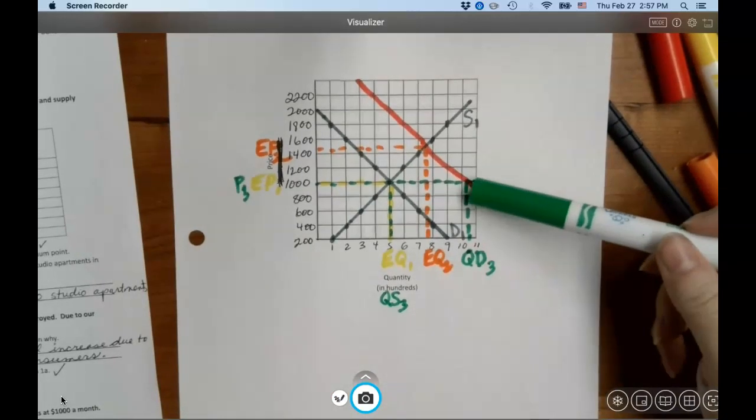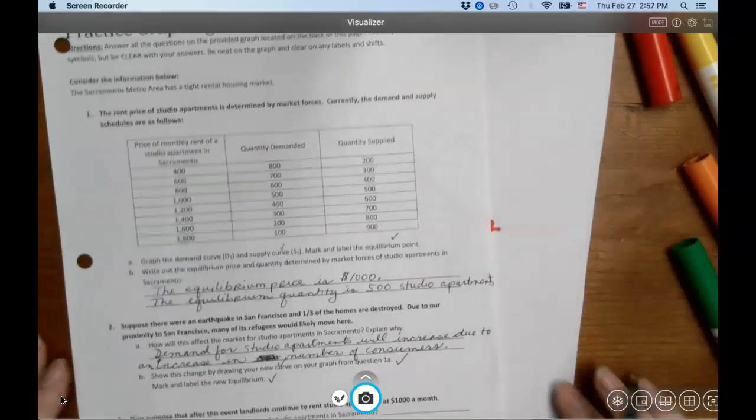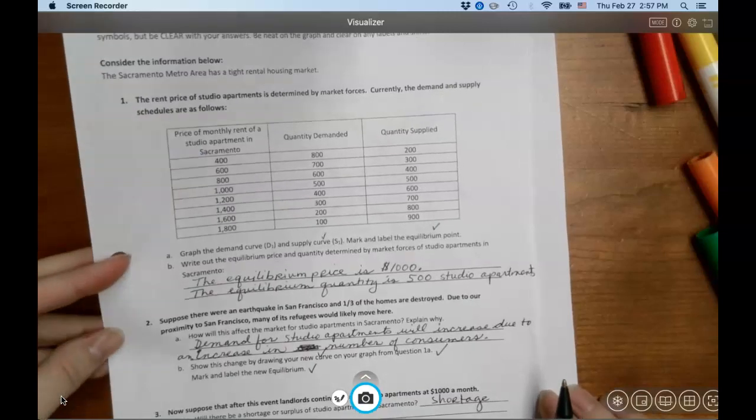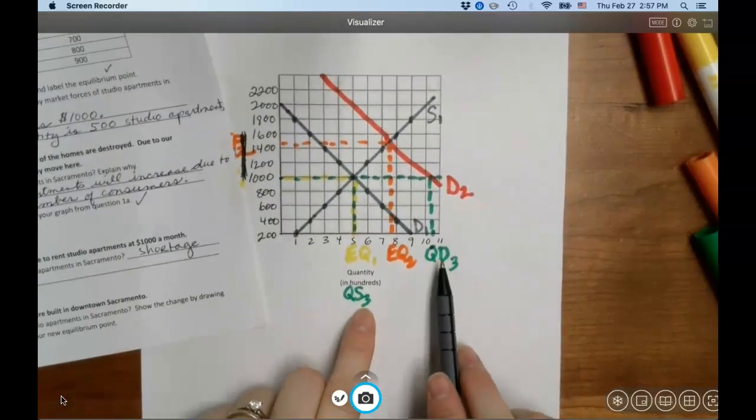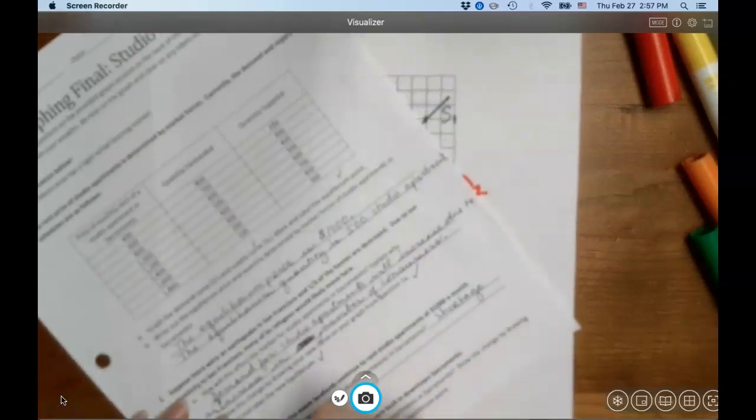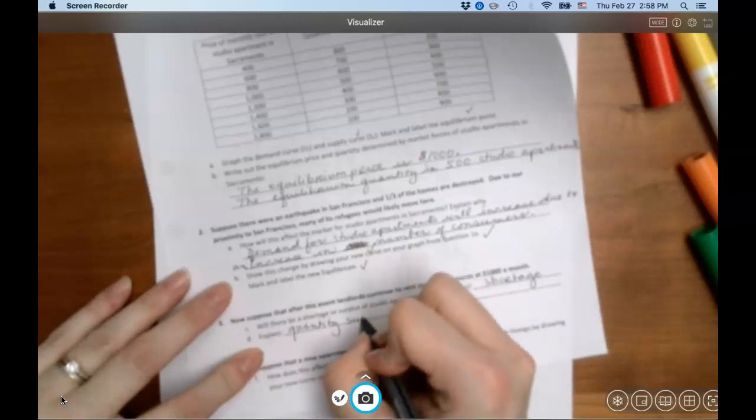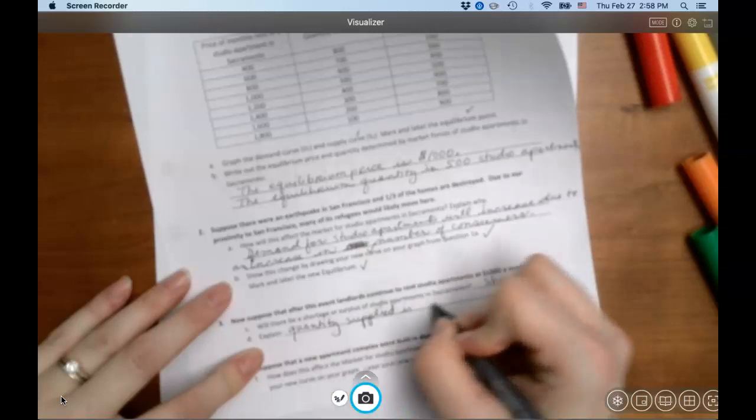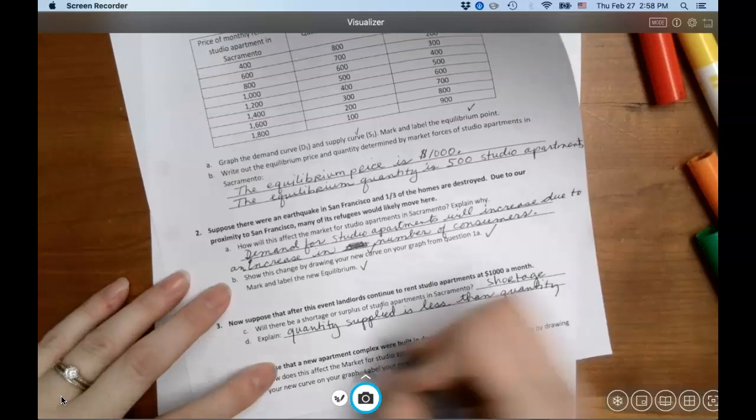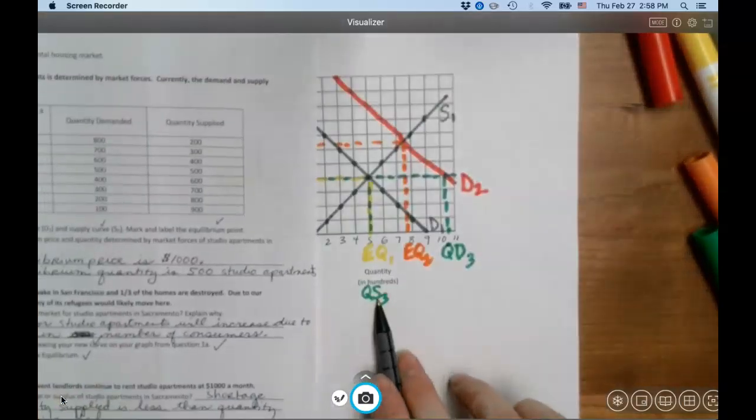All right, so what does that give us? Here's equilibrium, and we're down here. That tells us we have a what? We have a shortage. And then how do we explain this in a full sentence? Take a look at these. How do we describe this? What's going on here? Why do we have a shortage? Because quantity supplied is less than quantity demanded.